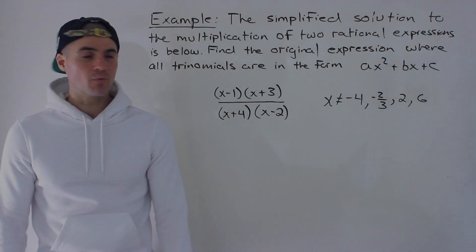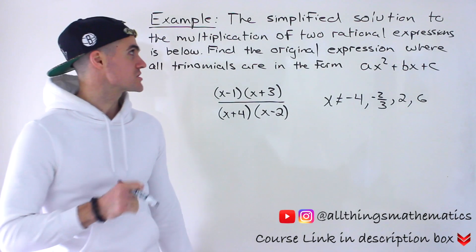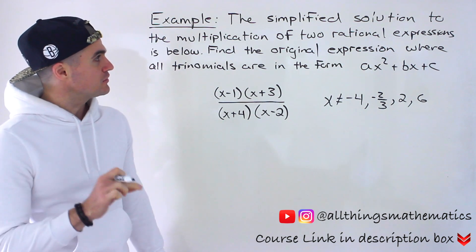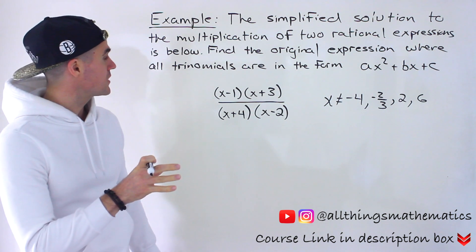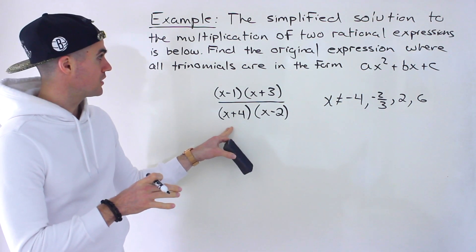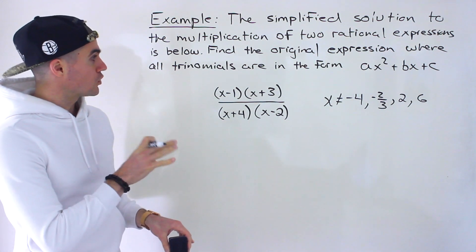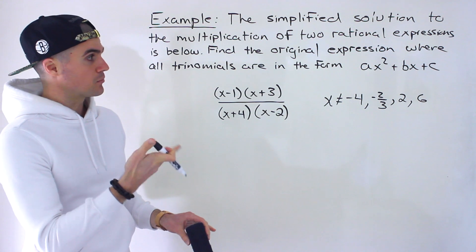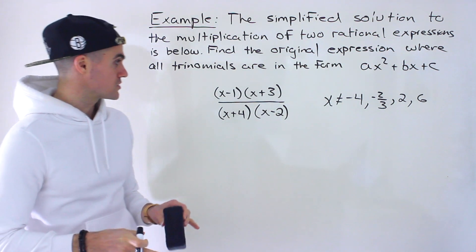What's up everyone? Patrick here. Welcome back, moving on to another question dealing with rational expressions. We're told that the simplified solution to the multiplication of two rational expressions is given, and we have to find the original expression where all trinomials are in the form ax squared plus bx plus c — that standard expanded form.